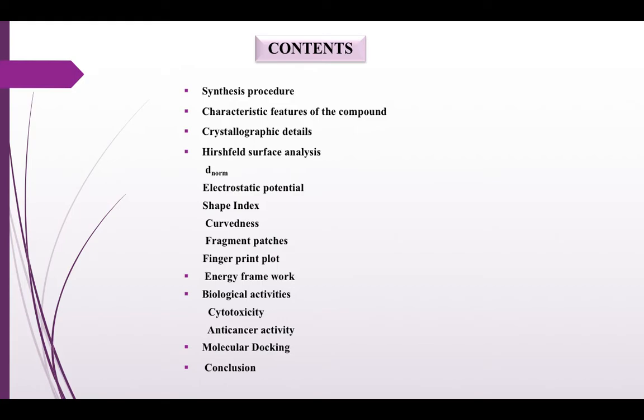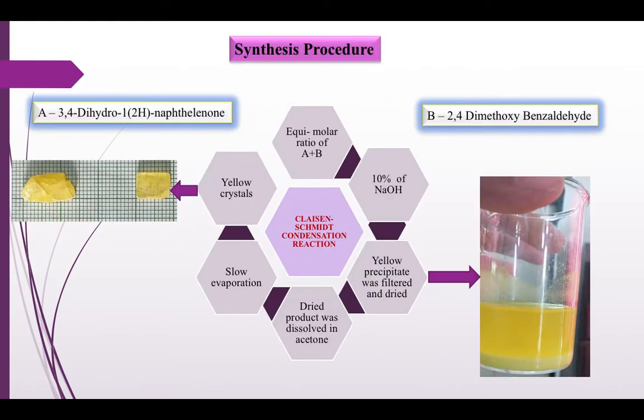The contents of my presentation are shown here. The title compound was synthesized using Claisen-Schmidt condensation technique and crystallized by slow evaporation method. In a 250 ml conical flask, an equimolar ratio of 3,4-dihydro-1,2-H-naphthalene-1-one and 2,4-dimethoxy-benzaldehyde were taken.